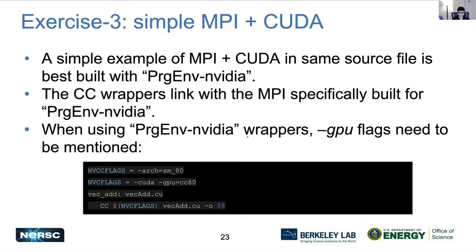In exercise three, we include MPI in the mix. In this example, we have MPI and CUDA code all in the same file. The best way to do this is to use the compiler wrapper from PrgEnv-nvidia, because if you use NVCC here, NVCC will not recognize MPI. That's why you need to use the compiler wrapper that comes with PrgEnv-nvidia — it will only work if you use this particular module and the compiler wrapper, because then it will be linking in both MPI and CUDA.